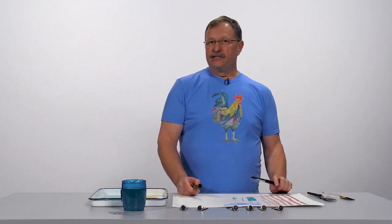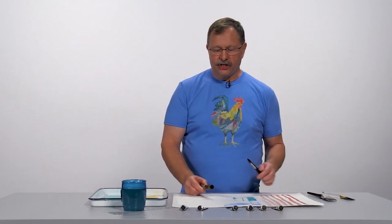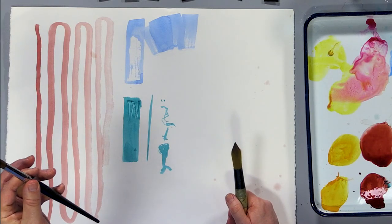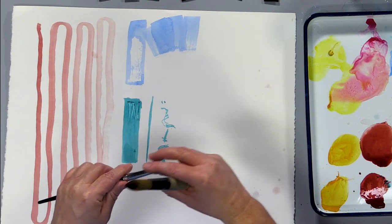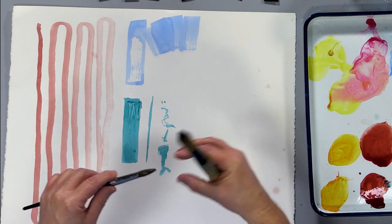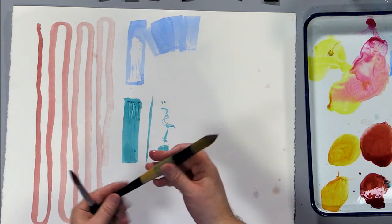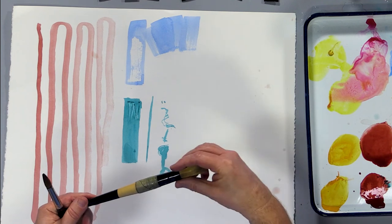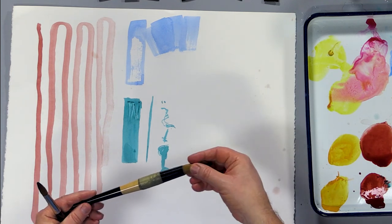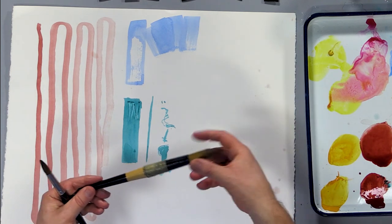The difference between an expensive brush and a less expensive brush is the quality of the bristles. A high-end brush is made of natural hairs and will give you much more water retention and pigment retention in the bristles.